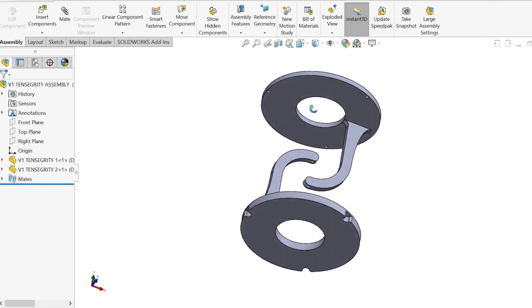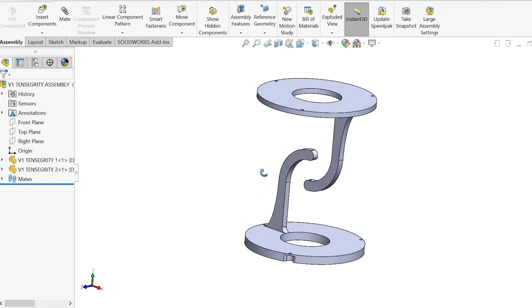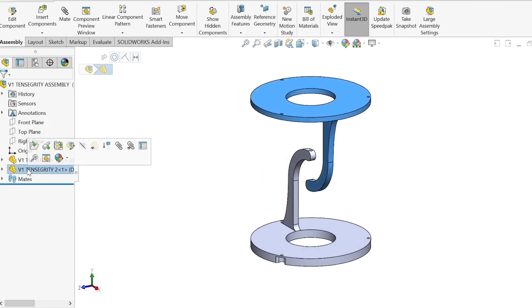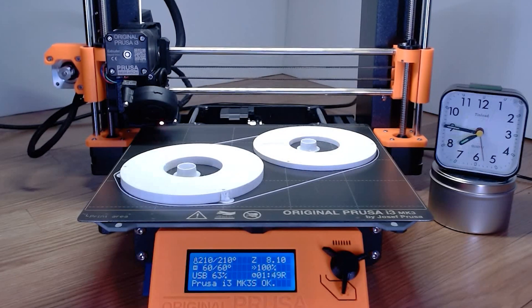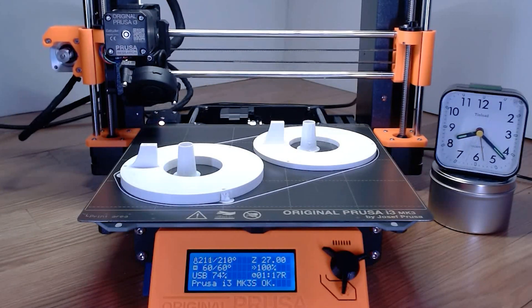After getting some inspiration from other designs online, I went into SolidWorks and created a CAD model that includes a top and bottom piece. I then sliced the model in PrusaSlicer and printed the design in white PLA in just over 5 hours.